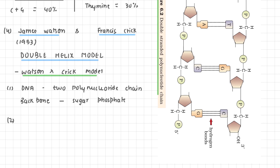There will be anti-parallel polarity between the two strands. When I say anti-parallel polarity, what do I mean? Anti-parallel polarity means the two DNA strands run in opposite directions — one strand runs in the 5' to 3' direction, while the complementary strand runs in the 3' to 5' direction.